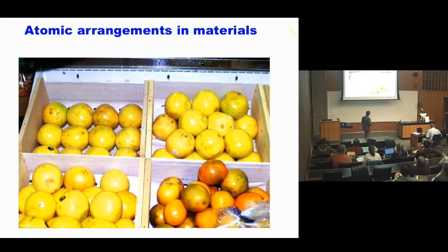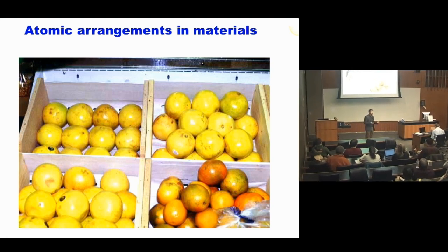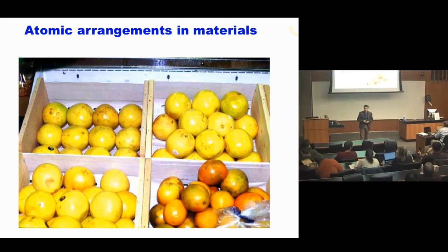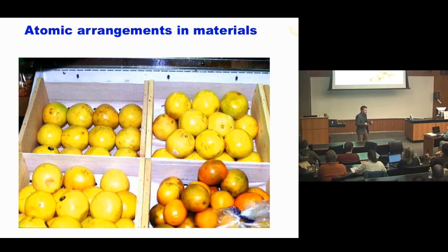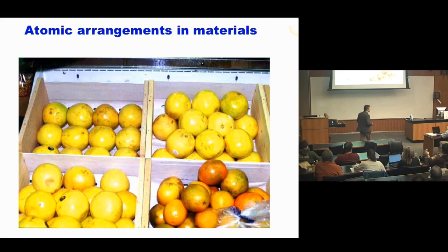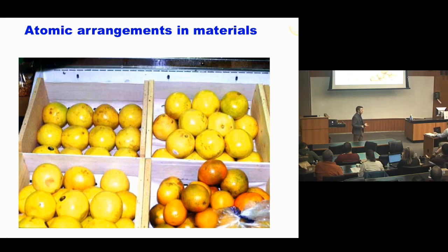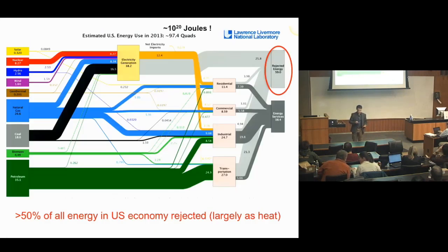This may describe the ground state structure of the material at very low temperature. But at finite temperature, there's kinetic energy in the system and the atoms vibrate around. If you're a farmer who picks fruits, puts them in boxes at the back of your truck, and drives down some dirt road so it shakes around - the question is what's going to happen? Which arrangements of atoms are going to remain mechanically or thermodynamically stable? These are some of the questions we like to investigate.